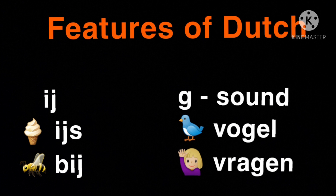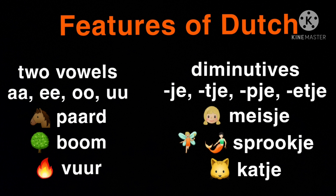And sorry if my Dutch sounds a bit weird, but it's not my native language and I'm trying my best. Here are some more features of Dutch. The combination of two vowels, like double A, double E, double O and double U, is also very Dutch.